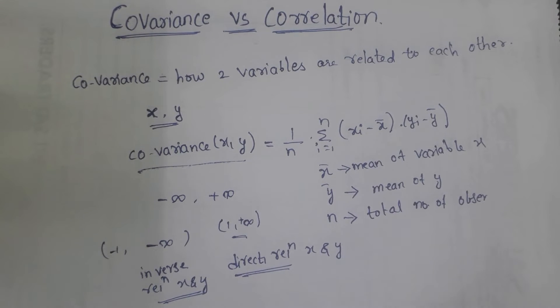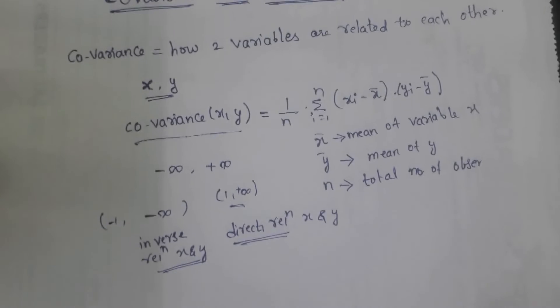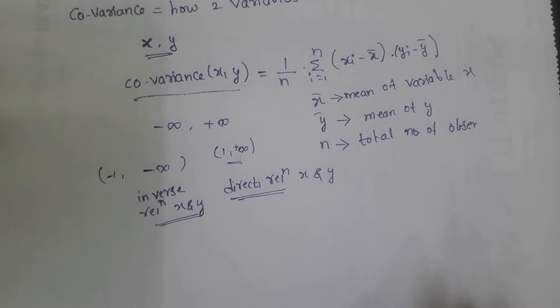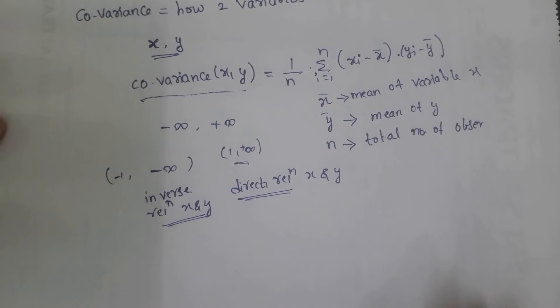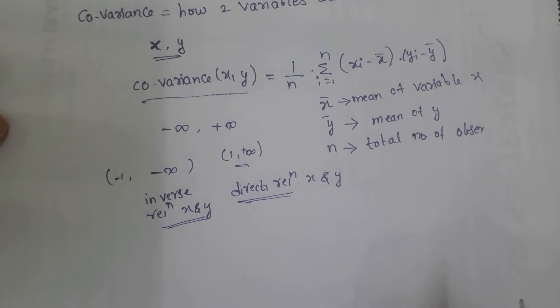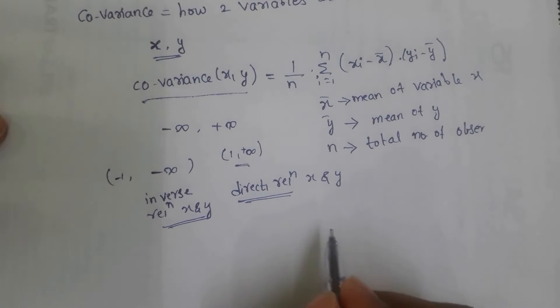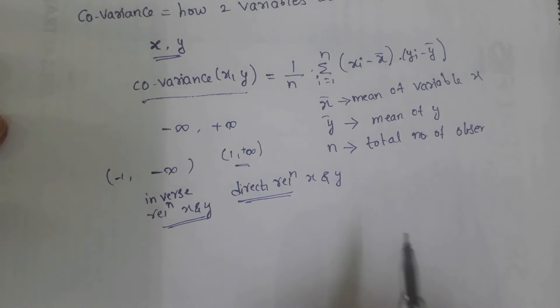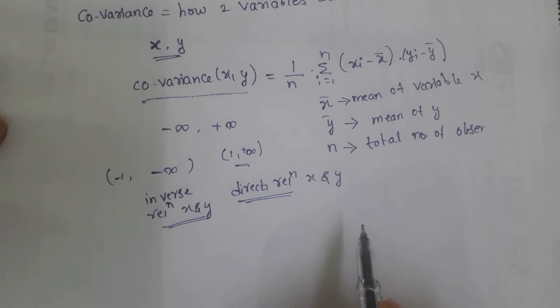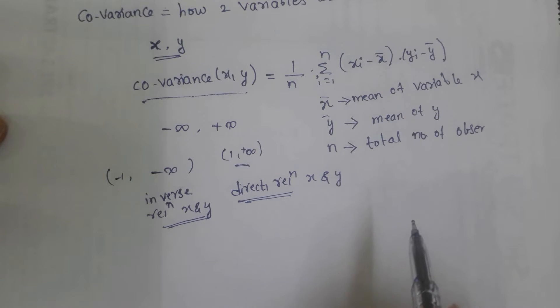Suppose we have two variables x and y. If the covariance value is positive, x and y move in the positive direction together.